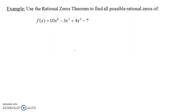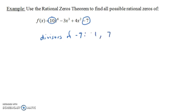Let's do an example: use the rational zeros theorem to find all possible rational zeros of this function. Notice we have a polynomial with all integer coefficients. What we need to look at is the constant term at the end, negative 7, and the leading coefficient, 10. So what are the divisors of negative 7? There are only two — 1 and 7 — though we consider plus and minus, so technically four divisors. And the divisors of 10 are 1, 2, 5, and 10 — again with plus and minus in each case.